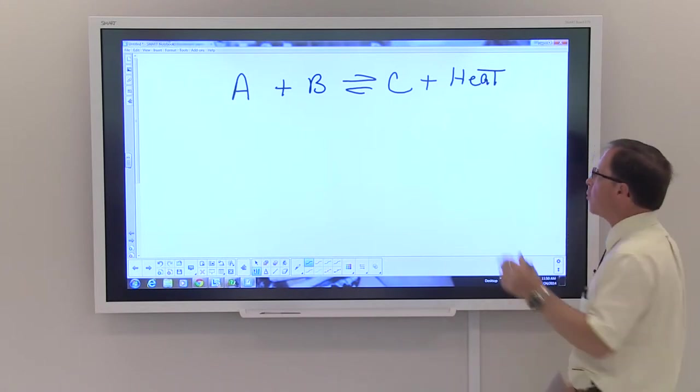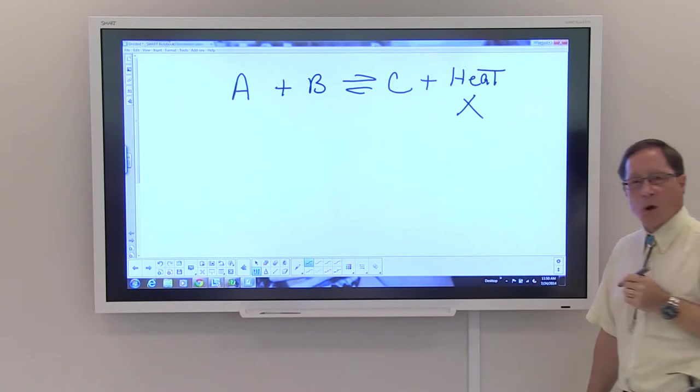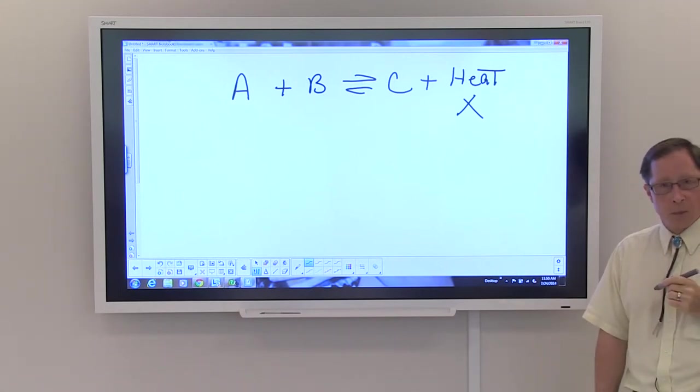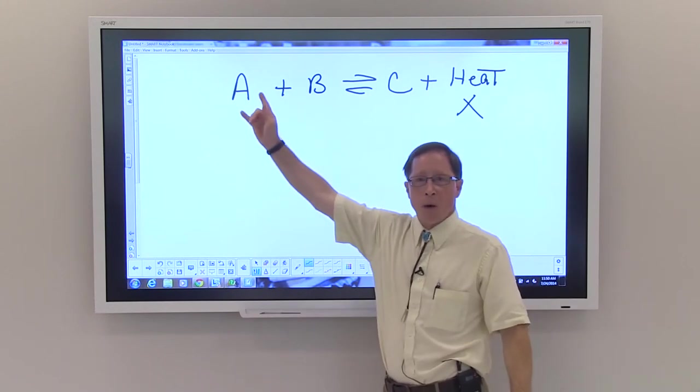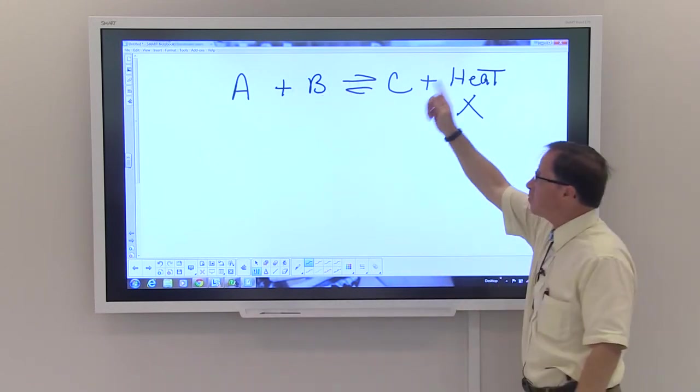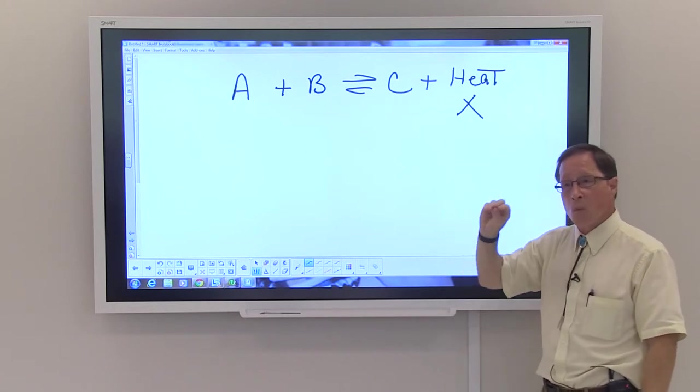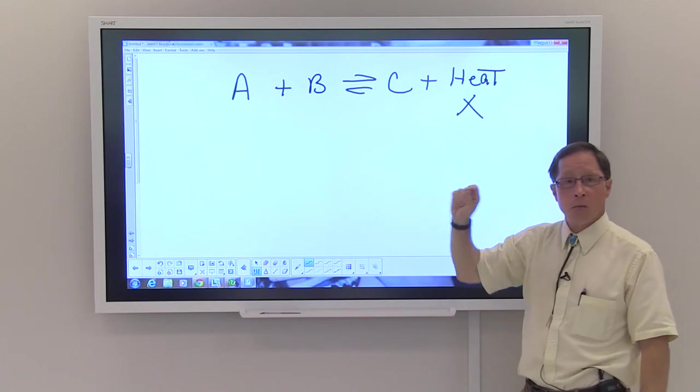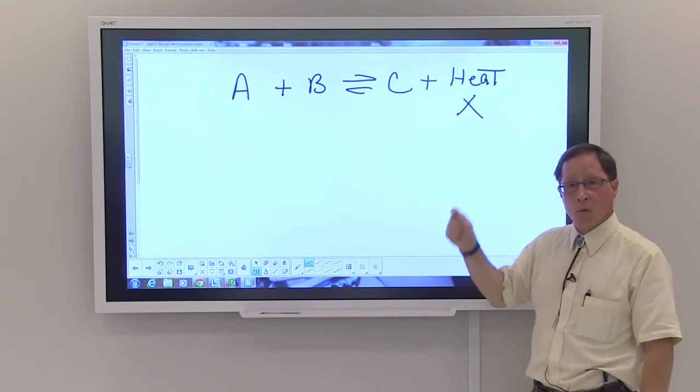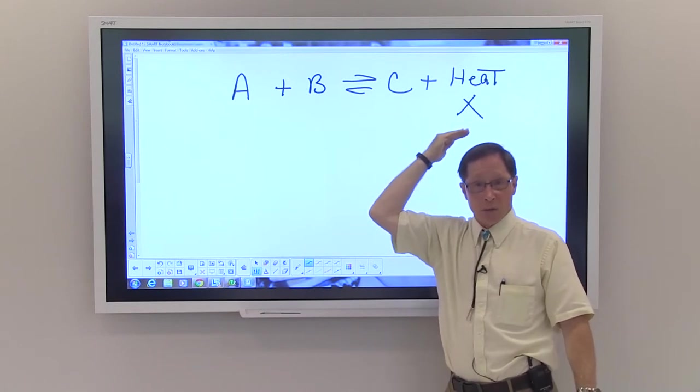What happens if we remove heat from the process? In that instance, there'll be more A and B converted to C plus heat. So if you want it to produce a lot of C, all you would need to do would be to cool the reaction down and make the equilibrium shift this direction.